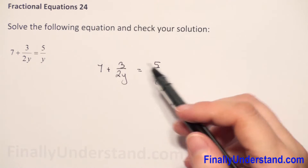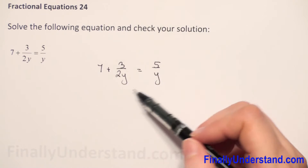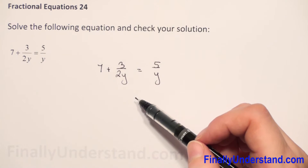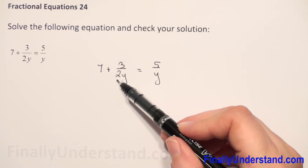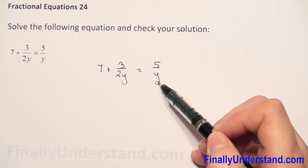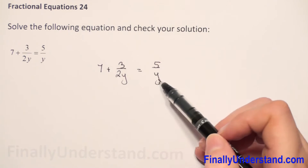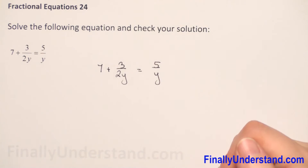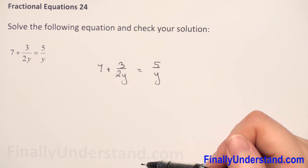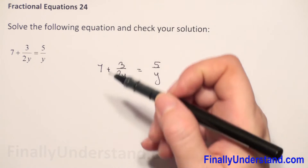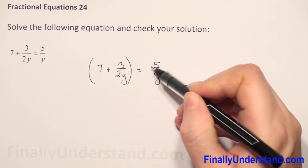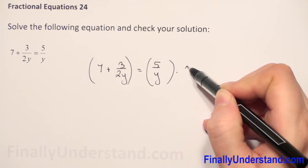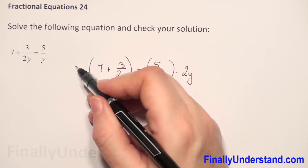In this example we have fractions, so first we have to get rid of these fractions. In the denominators we have 2y and y, so the lowest common denominator for 2y and y will be 2y. So we need to multiply both sides of our equation by the lowest common denominator — we will multiply both sides by 2y.